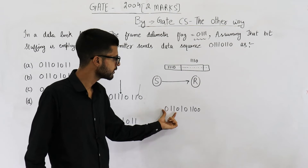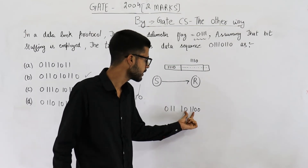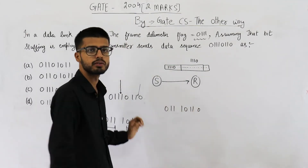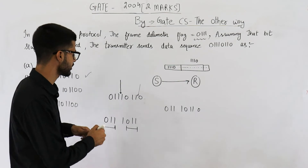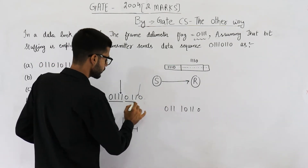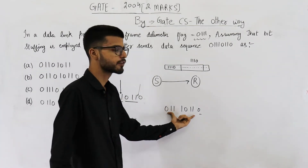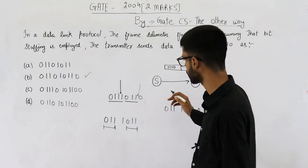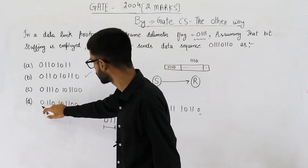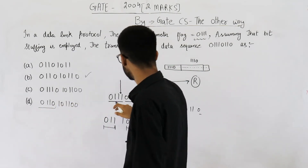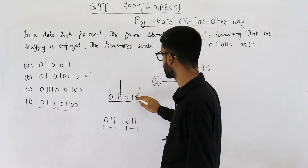The receiver sees 0111, so it removes the following 0 which was added by the sender. Again, 0111 is received, so it removes that 0 as well. After removing both stuffed 0s, the receiver gets 011101110, which completely matches the original data. So the answer is that the sender sends 011100101011111100, having added a 0 in two places. Option D is correct.